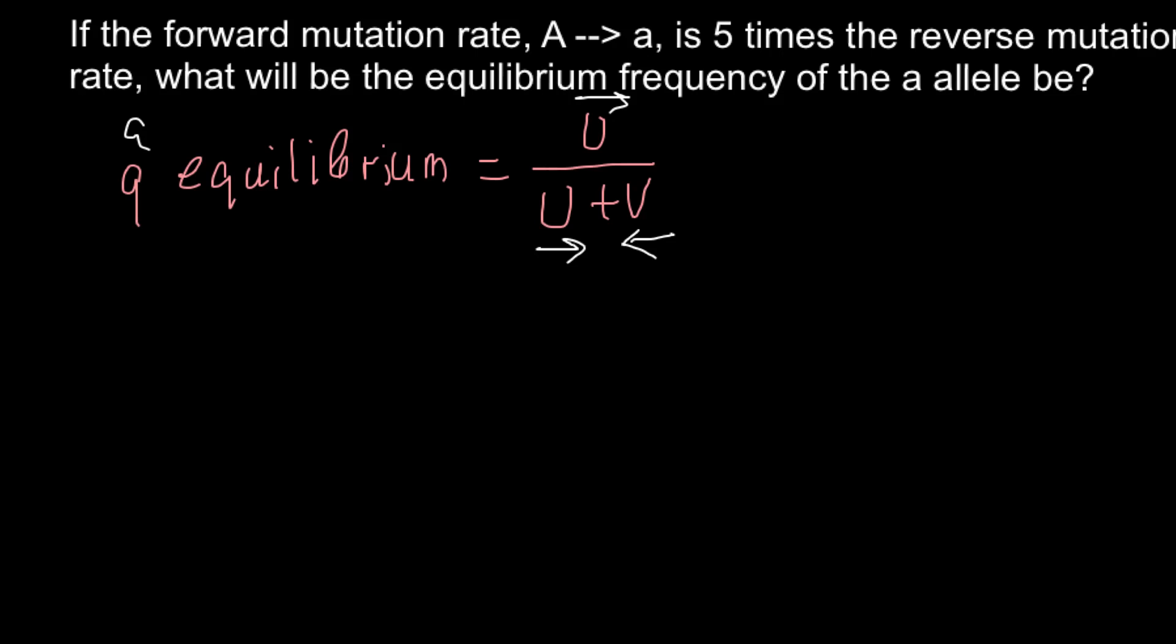And in our problem, we are told that forward mutation rate, so forward would be mutation from dominant allele into the recessive allele, and this would be 5 times greater than backward mutation rate. And here is the backward mutation rate, so this is going to be just the reverse reaction.